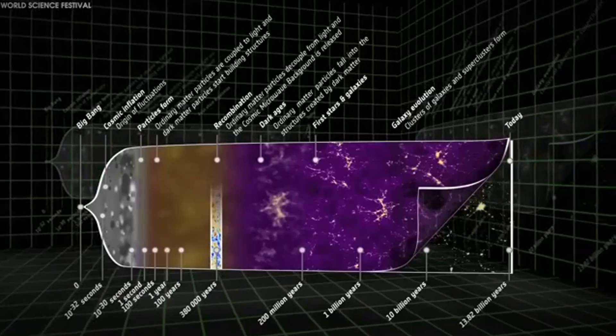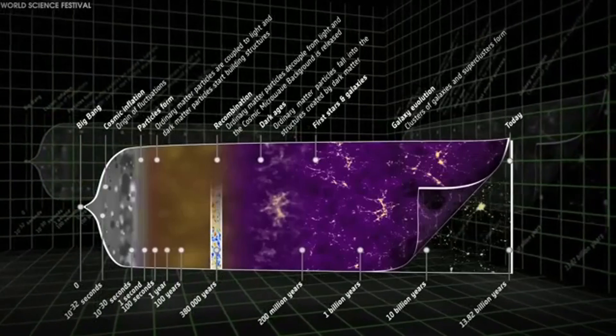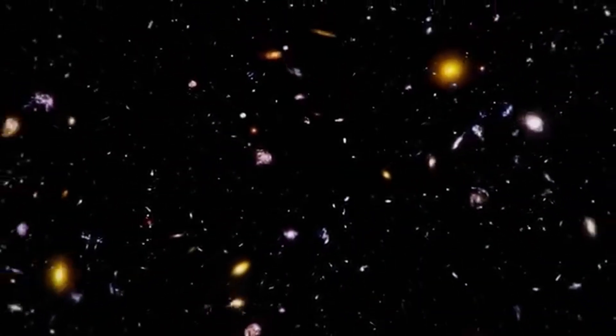Similarly, the flatness problem, which concerns the precise balance of the universe's initial conditions to allow for a flat, geometrically simple universe, may be explained if the universe undergoes repeated cycles that drive it toward flatness over time.